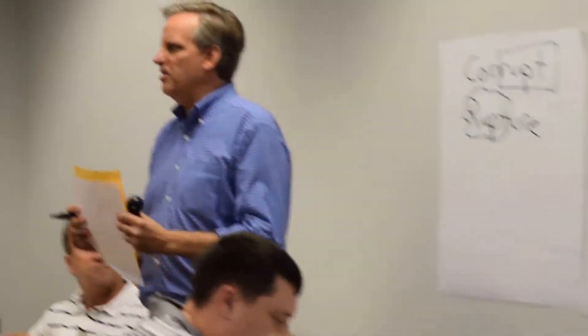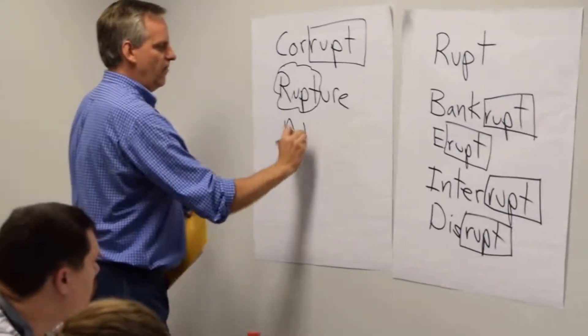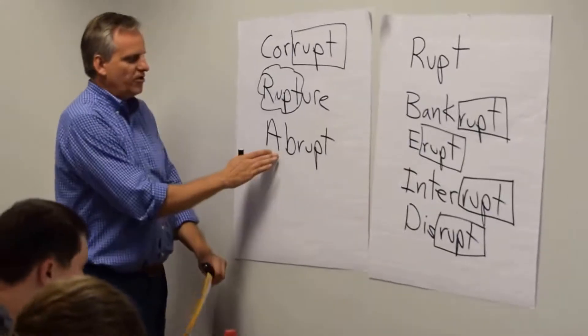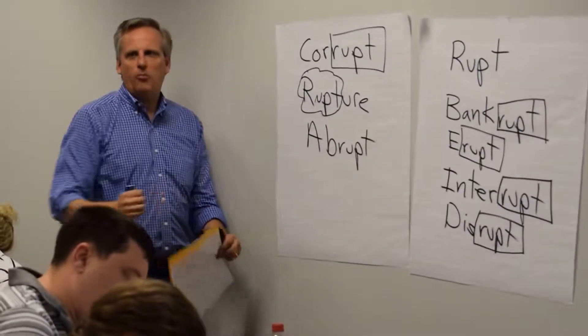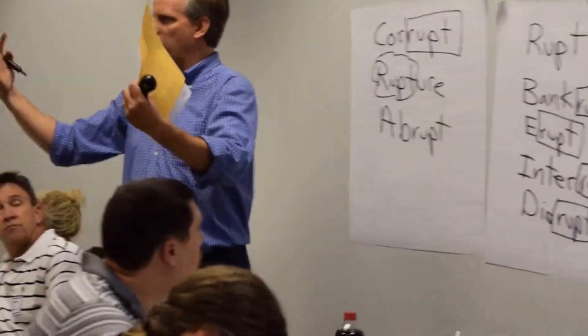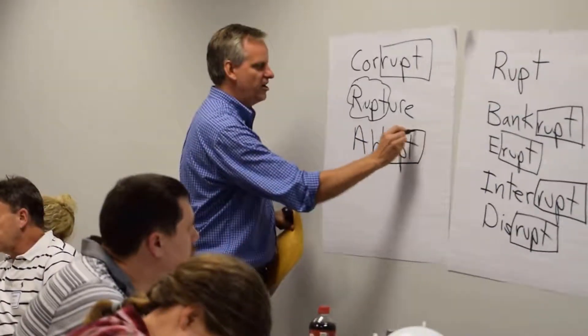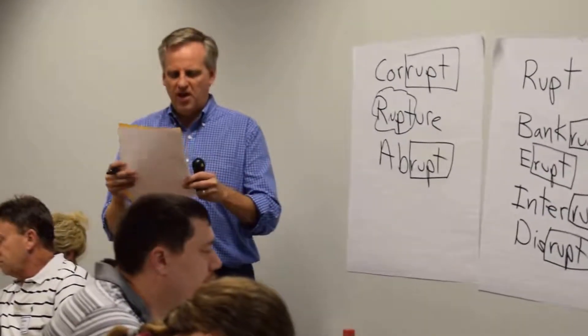Let's say we're riding in the car and someone cuts across and we slam on the brakes — we could say we've come to an abrupt stop. Our progress has been broken. Our going down the street has been broken. So we've got our root word 'rupt' right in there again with 'abrupt.'